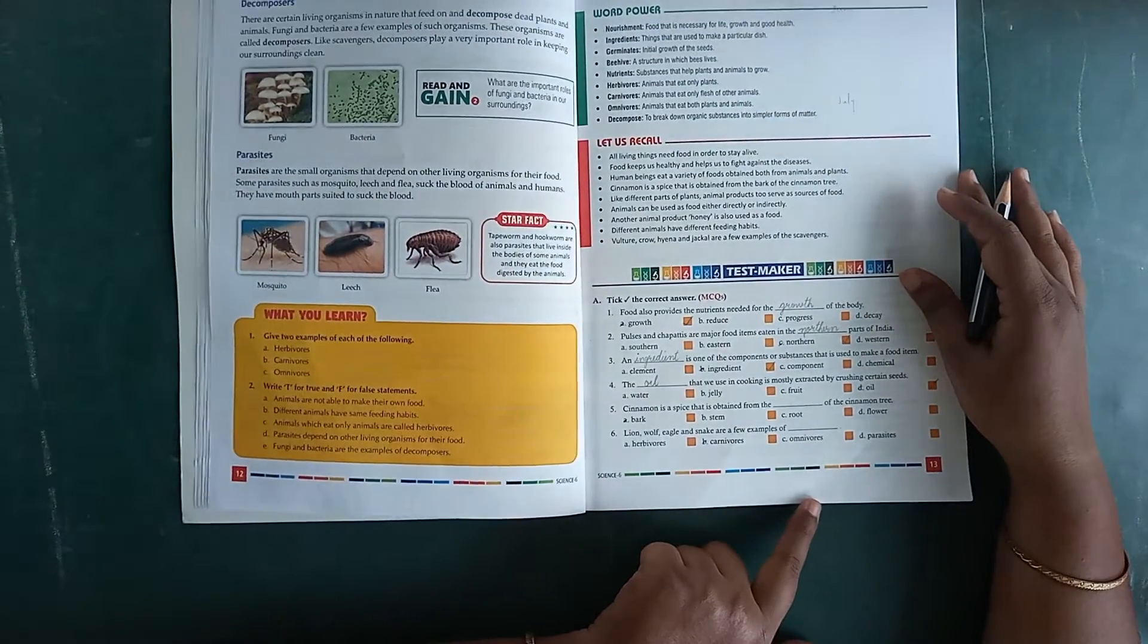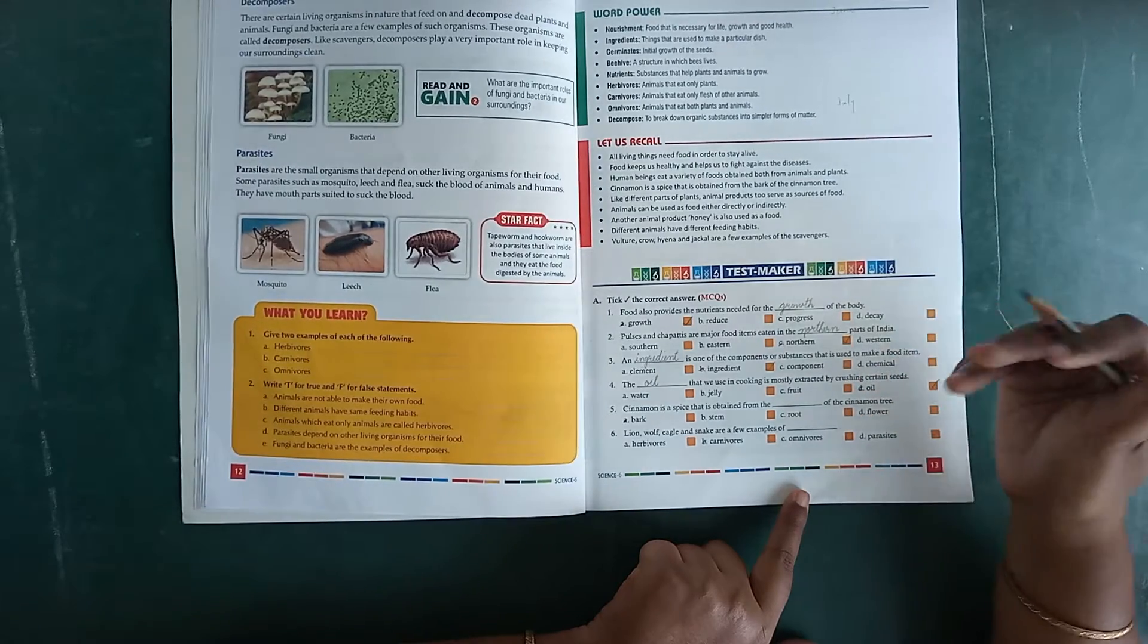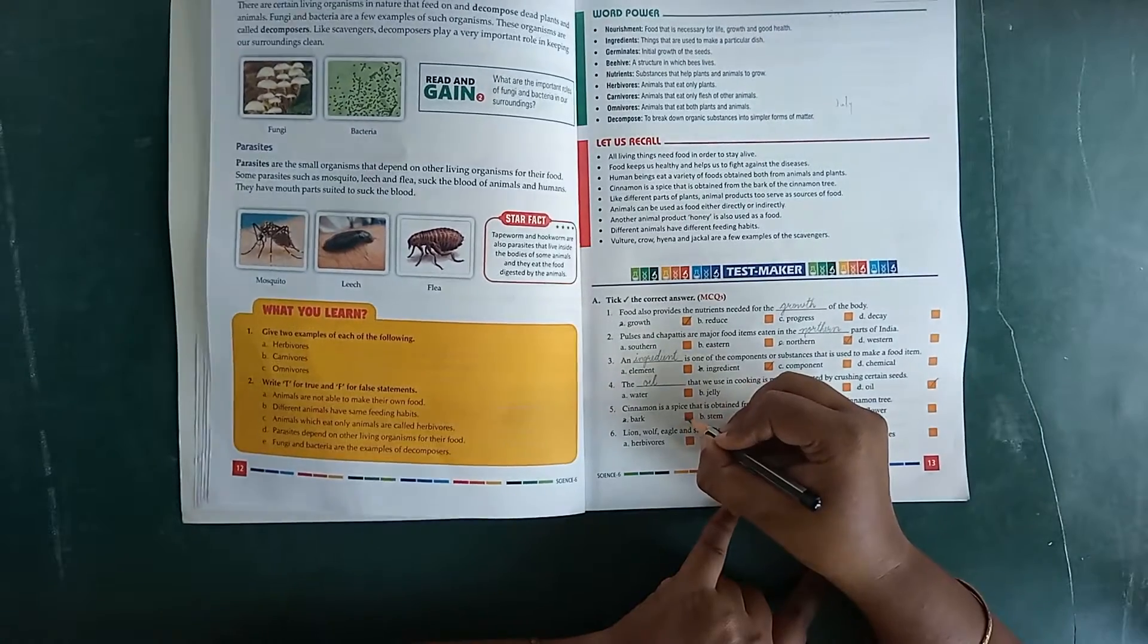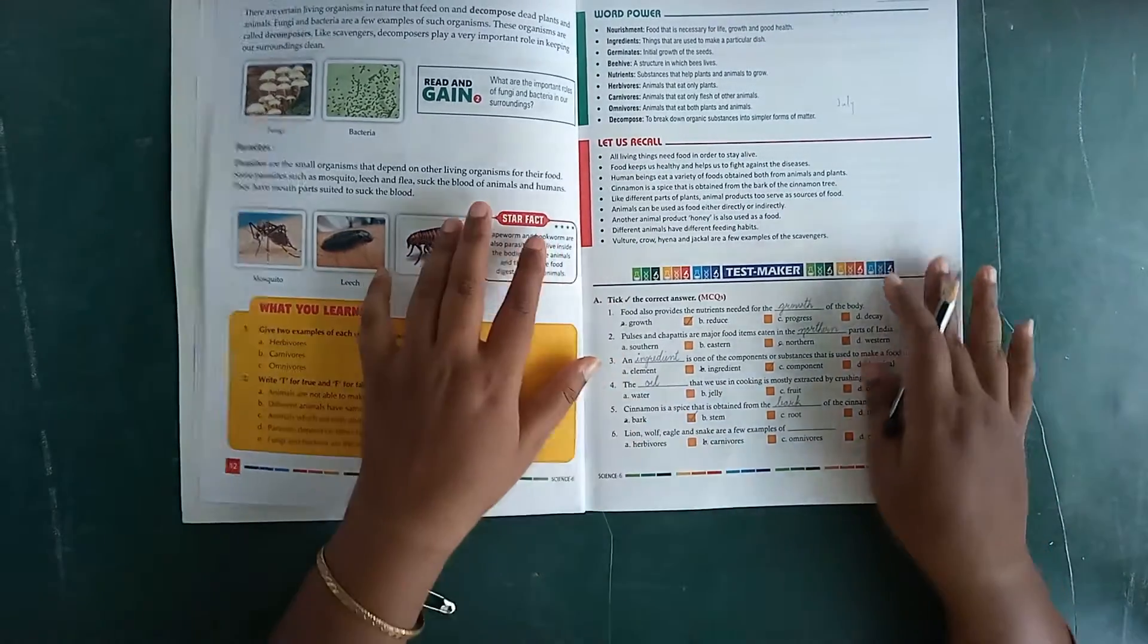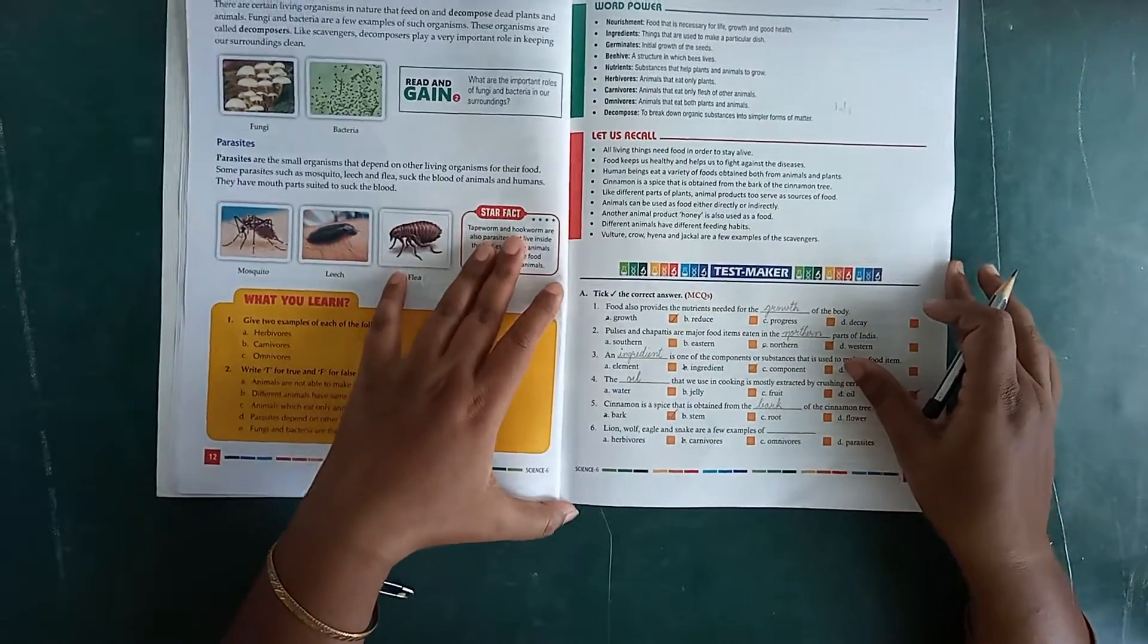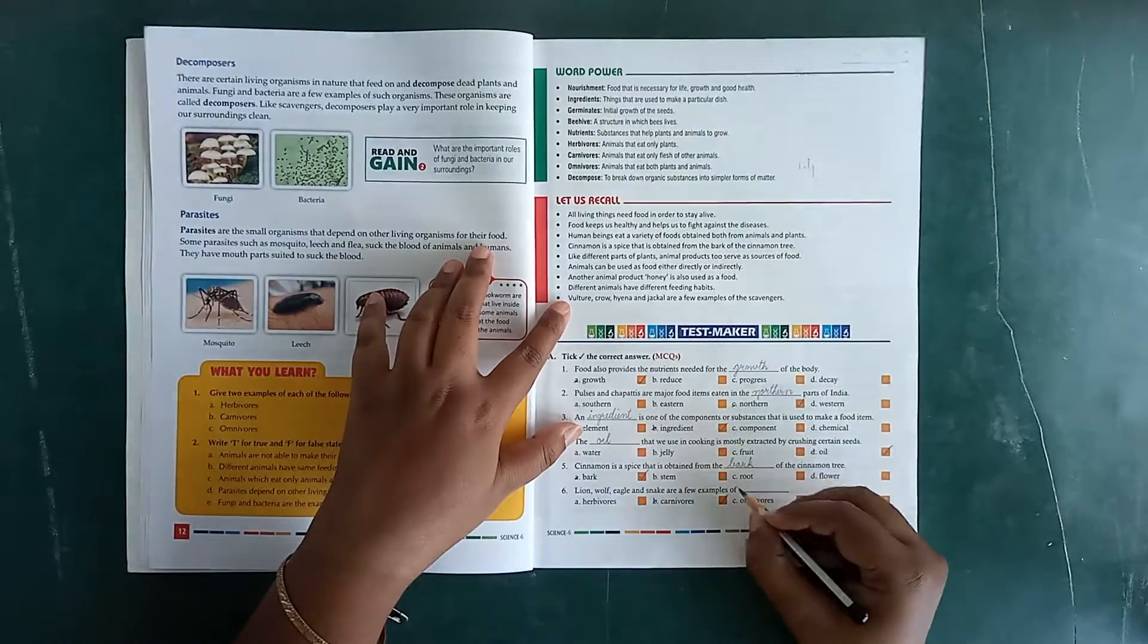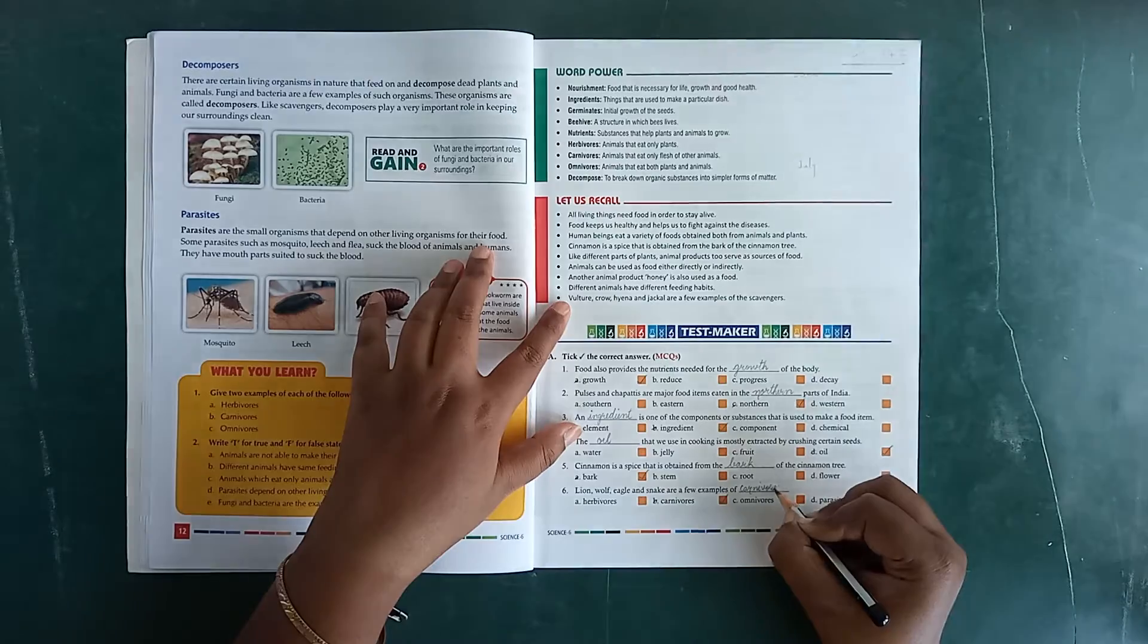Number 5. Cinnamon is the spice that is obtained from the dash of the cinnamon tree. It's A. Bark, B. Stem, C. Root, and D. Flower. It's A. Bark, bark of the cinnamon tree, B-A-R-K. Then number 6. Lion, wolf, eagle, and snake are a few examples of dash. Herbivores, carnivores, omnivores, or parasites. It's B, carnivores. Tick it here and here also write down C-A-R-N-I-V-O-R-E-S, carnivores.